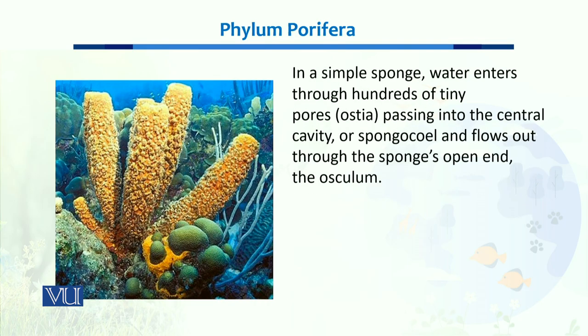In a simple sponge, when we talk about the mode of nutrition, water enters through hundreds of tiny pores called ostia, passing into the central cavity which is called the spongocoel, and then it flows out through the open end which is called the osculum.